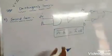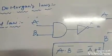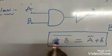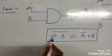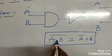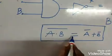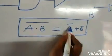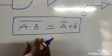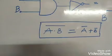When we observe these two diagrams, the formula of the second law is: A dot B, all bar, is equal to A bar plus B bar. This is the formula of the second law.